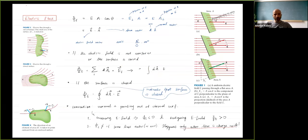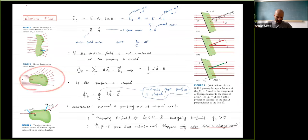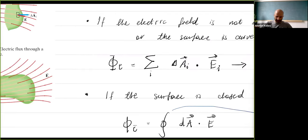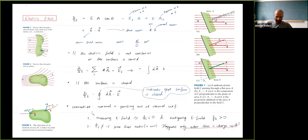Generally we will be talking about closed surfaces. A closed surface is like a shell that encloses a finite volume in space. In this case we represent the flux with a special integral sign that has a circle on it, indicating a closed surface. The flux is calculated for this closed surface because we can calculate the electric field and the area vector at any point on the surface.